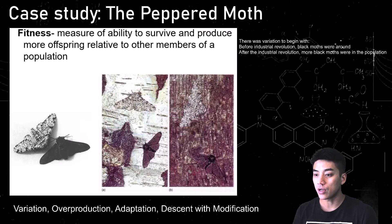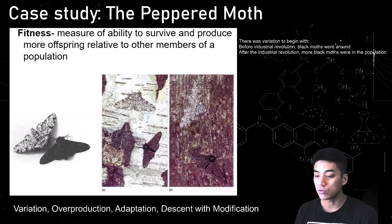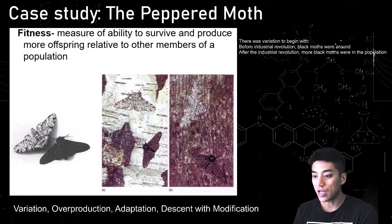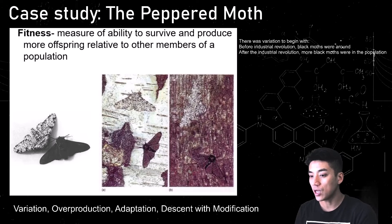I want to clear up a misconception: the moths didn't suddenly transform the color of their wings — the white moths didn't just take on black wings. That's not the case. There was always variation to begin with. Before the industrial revolution, black moths were always around, but their numbers weren't very high. After the industrial revolution, with the countryside covered in soot, the black moths had better fitness, could survive and produce more offspring relative to other members of the population. This is known as natural selection.